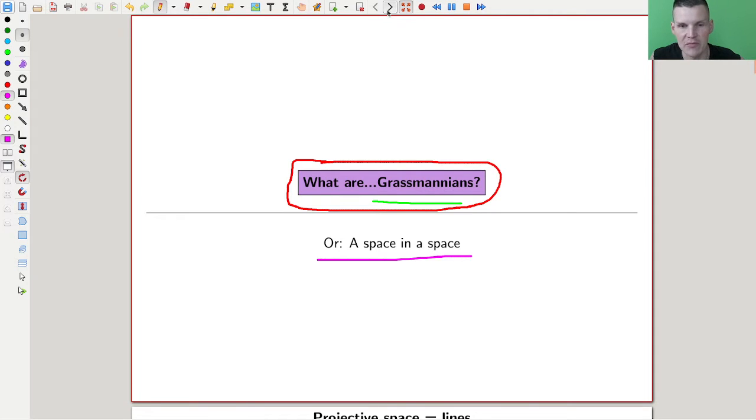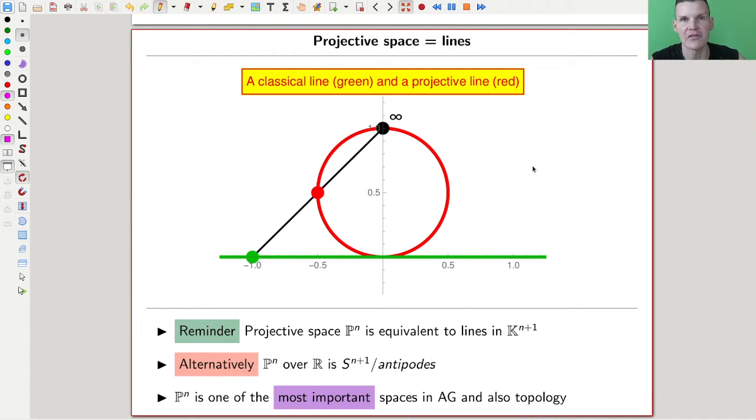Let's get started with a reminder of what projective spaces are, because Grassmannians will generalize projective space. Projective space is this P^n, and there's usually this idea of having lines in k to the n plus 1. So lines in k squared would be projective 1 space. You identify points on a line and make that a new point.